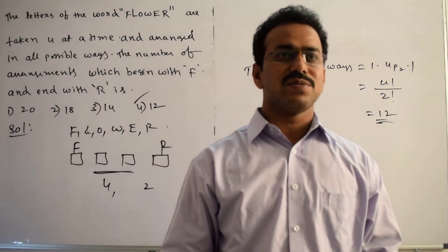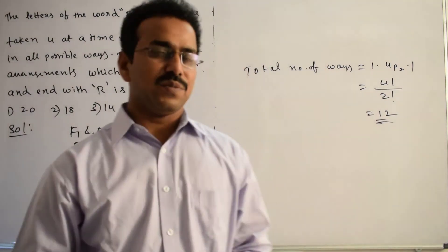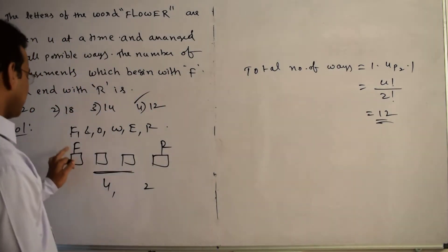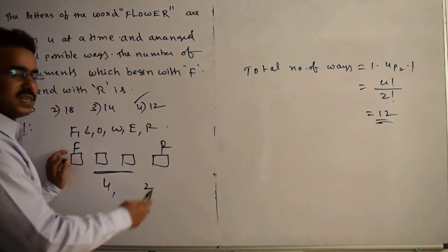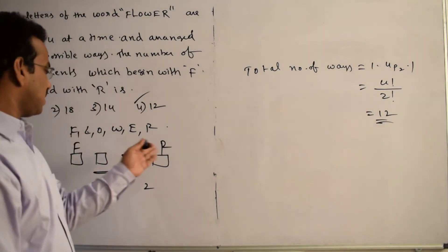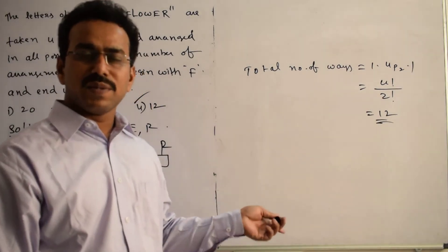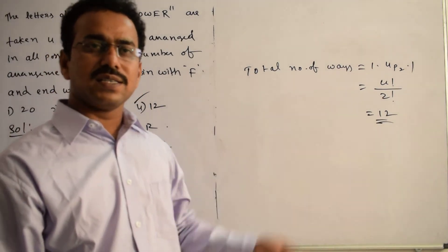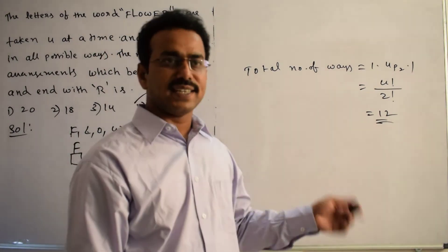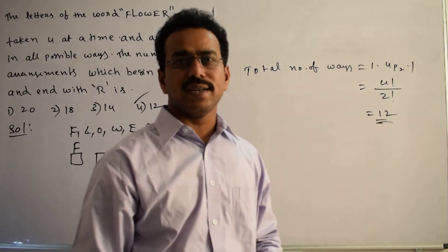To summarize the process: we took 4 boxes. As per the given constraint, we filled the first box with F and the last box with R. After filling these 2 boxes, 2 boxes remained with 4 letters available. We arranged those in 4P2 ways, giving us the required result of 12.